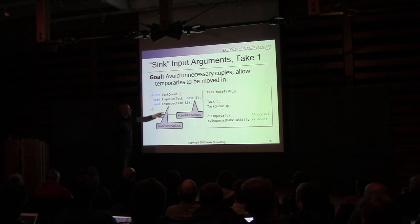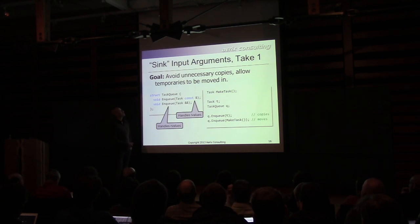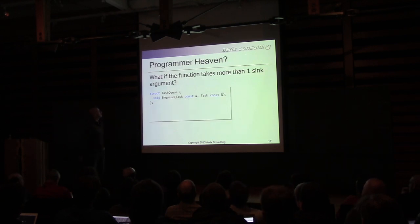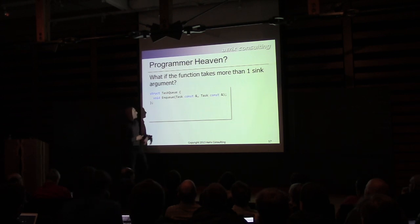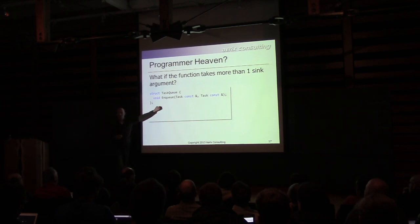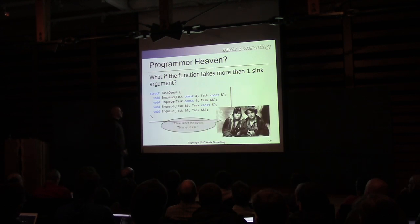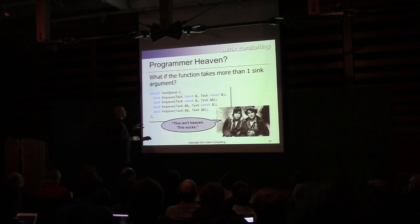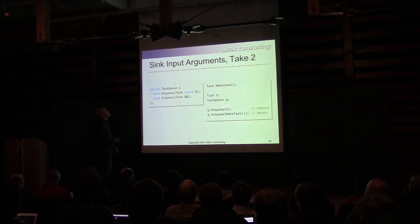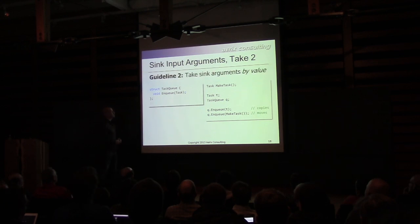This seems pretty great — programmer heaven. We're only paying for what we need to. But what happens if you take more than one sink argument to your function? Having just one overload is clearly not sufficient — nothing gets moved. If we permute the overloads, this really sucks — we don't want to have to do this. So what's the correct thing to do? The simple thing: pass it by value. Pass it by value — it's simple and it works.